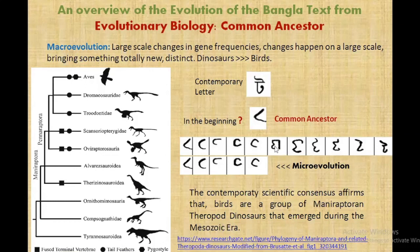You can see the letter again — this is the common ancestor. In this part you can see the microevolution, but in this other part you can see something totally new — this is macroevolution. The contemporary scientific consensus is that birds are a group of maniraptoran theropod dinosaurs that emerged during the Mesozoic era — and this is very much relatable to the evolution of the Bengali text.